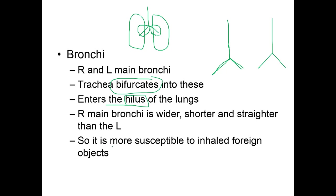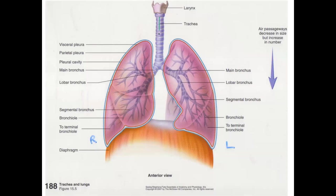The right bronchus is more susceptible to having a foreign object get stuck in it because it is more vertical. A foreign object coming down the trachea will likely go down the right primary bronchus. The left bronchus is more horizontal, so it's less likely — though not exempt. Here you see the trachea branching into primary, secondary, and tertiary bronchi all the way to the terminal ends.